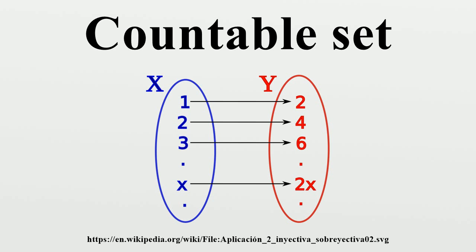What about infinite subsets of countably infinite sets? Do these have fewer elements than N? Theorem: Every subset of a countable set is countable. In particular, every infinite subset of a countably infinite set is countably infinite. For example, the set of prime numbers is countable, by mapping the nth prime number to n: 2 maps to 1, 3 maps to 2, 5 maps to 3, 7 maps to 4, 11 maps to 5, 13 maps to 6, 17 maps to 7, 19 maps to 8, 23 maps to 9.